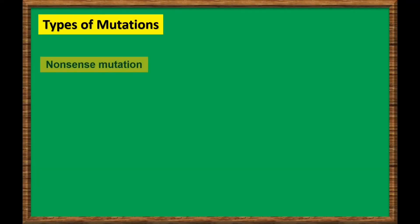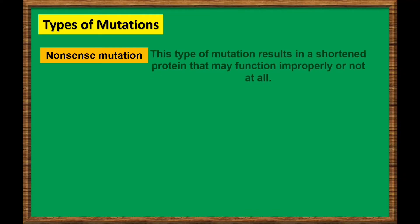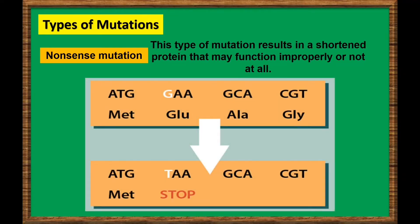The next type is nonsense mutation. A nonsense mutation is also a change in one DNA base pair. Instead of substituting one amino acid for another, the altered DNA sequence prematurely signals the cell to stop building a protein. This type of mutation results in a shortened protein that may function improperly or not at all. For example, the nucleotide guanine was replaced by thymine, thus giving instruction to the cell to stop building a protein.